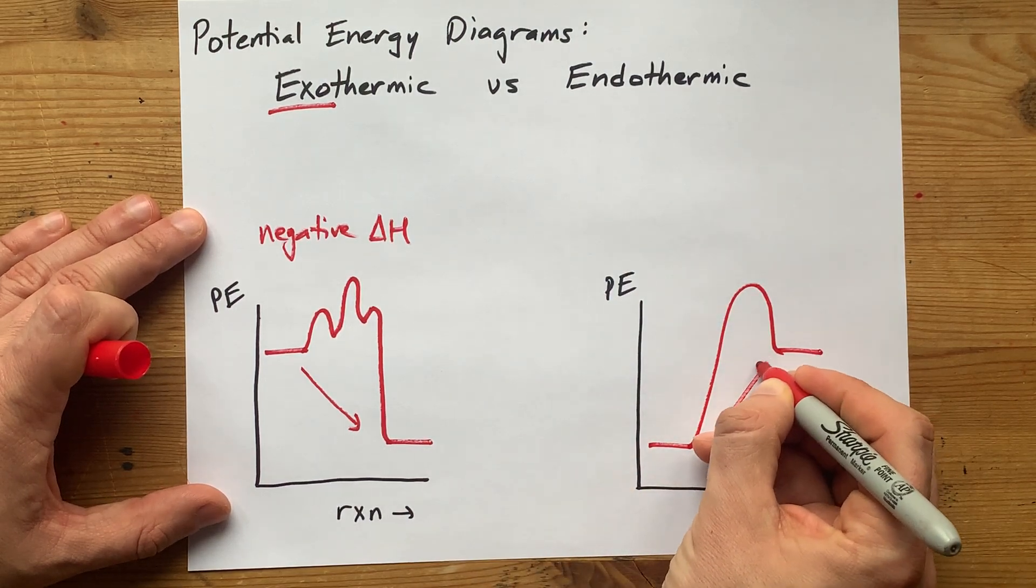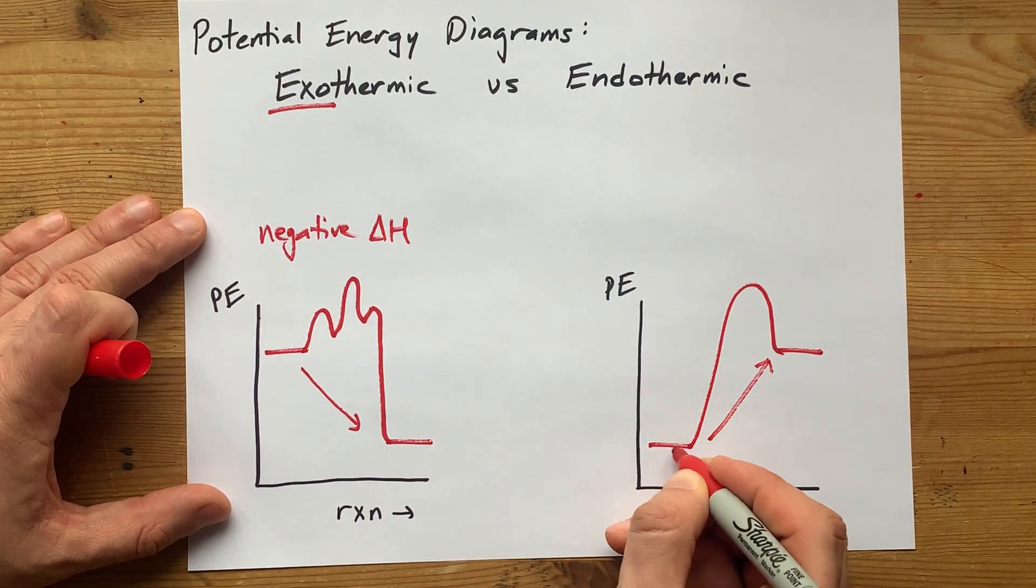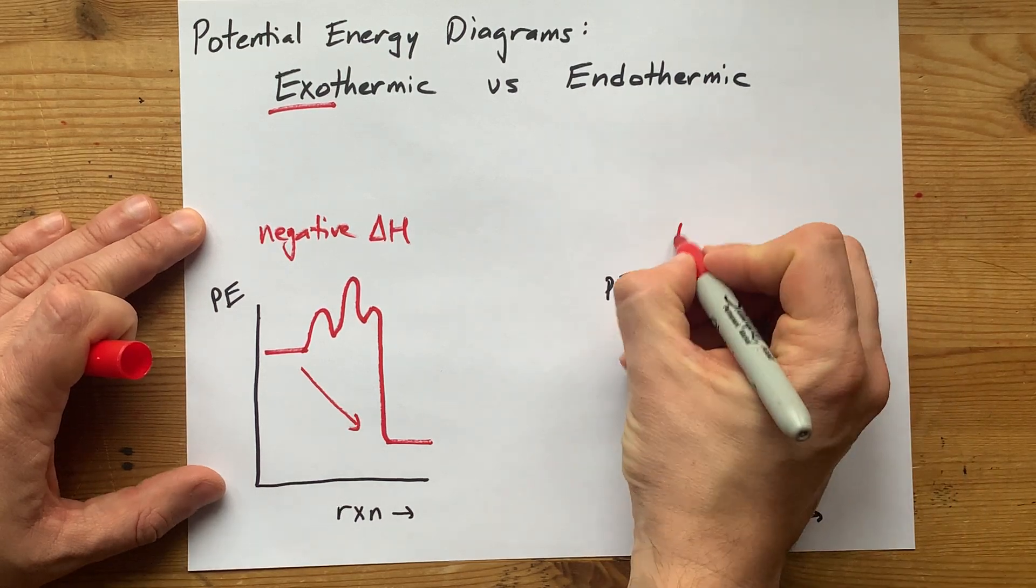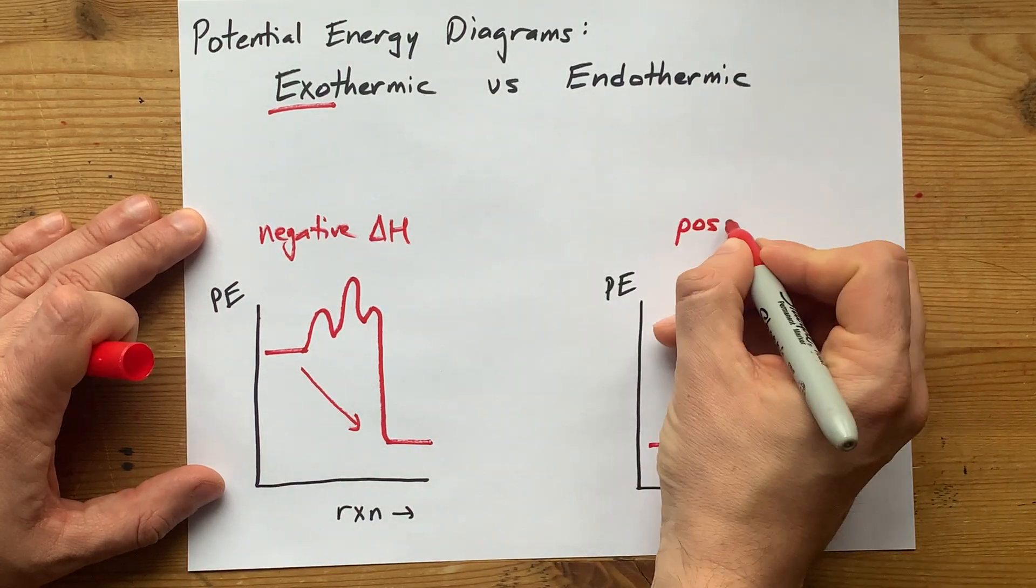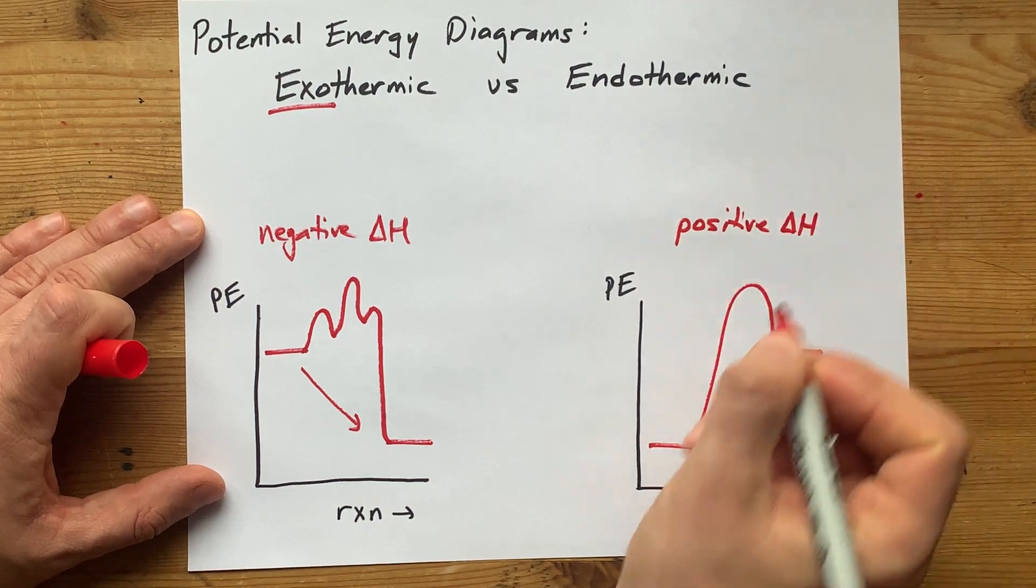It means you had to absorb energy in order to convert reactants to products. That means it's endothermic with a positive delta H.